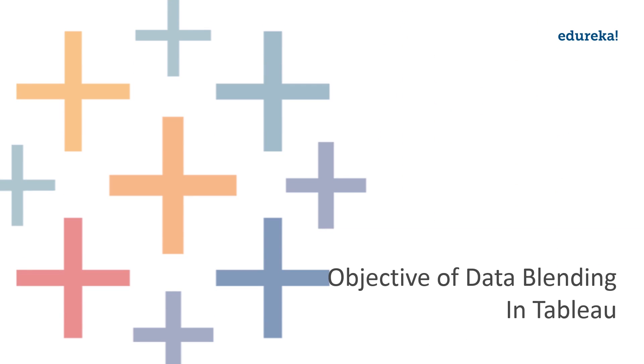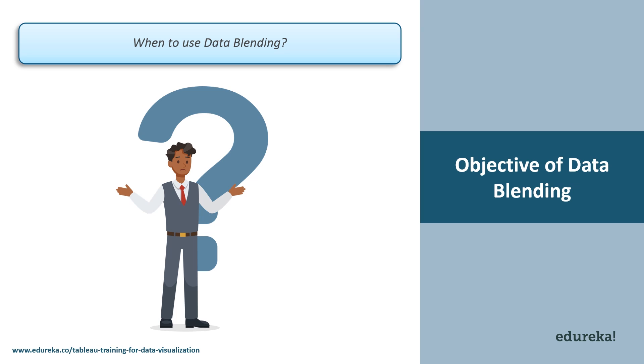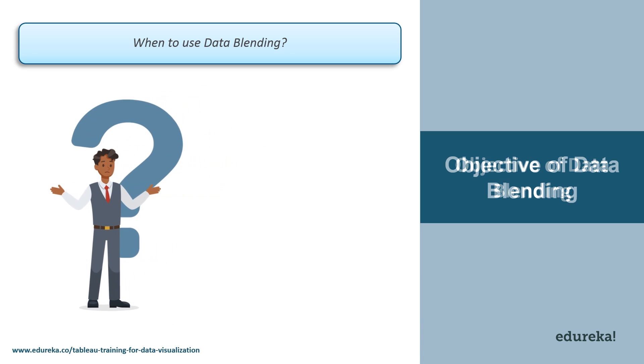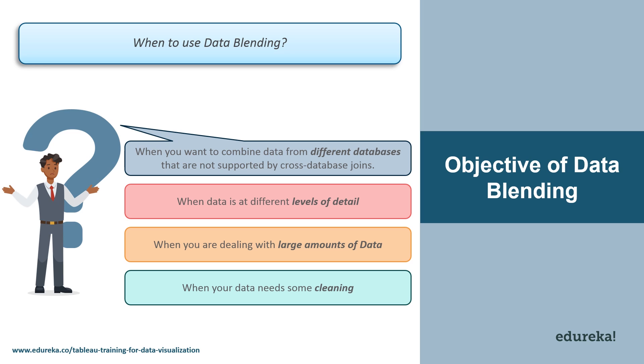So what is the objective of data blending in Tableau? Why do we need data blending? Now let's suppose you have transactional data stored in Salesforce and quota data stored in an Excel workbook. The data you want to combine is stored in different databases and the granularity of the data captured in each table is different. So in such a case, you use data blending. Now data blending could be very useful when you want to combine data from different databases that are not supported by cross database joints. Now cross database joints do not support connections to cubes, take Oracle S base for instance, or some extract only connections, take Google Analytics as your example. In this case, set up individual data sources for the data you want to analyze and then use data blending to combine the data sources on a single sheet.